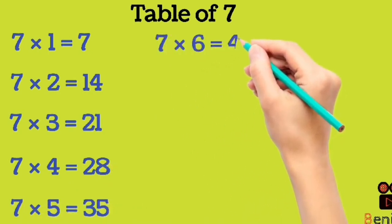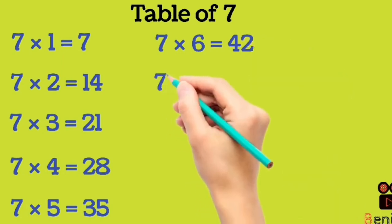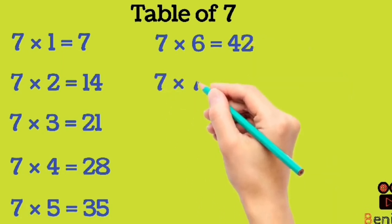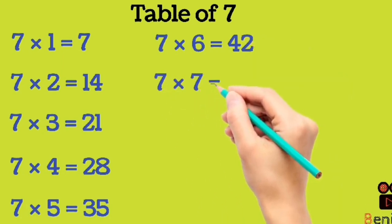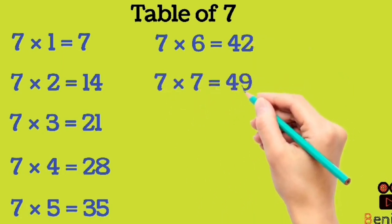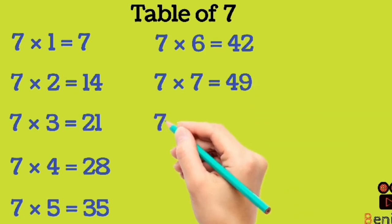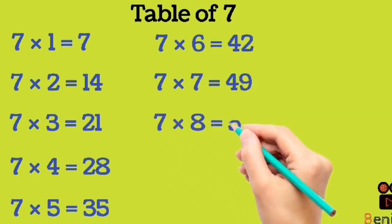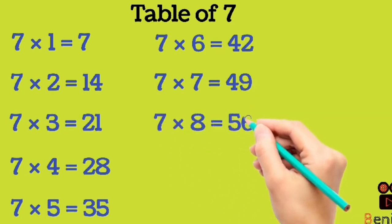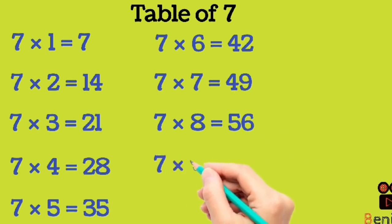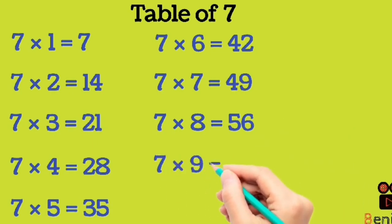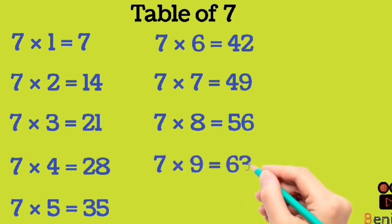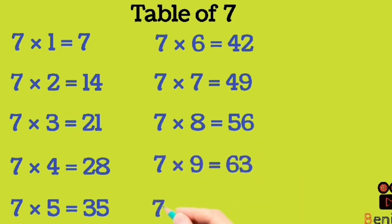7 7s are 49. 7 8s are 56. 7 9s are 63. 7 10s are 70.